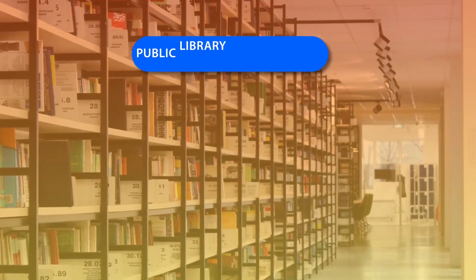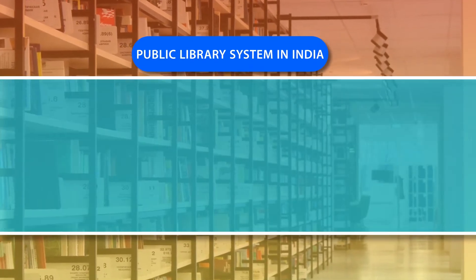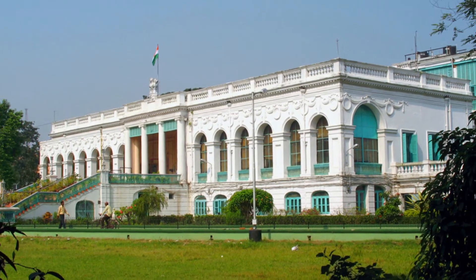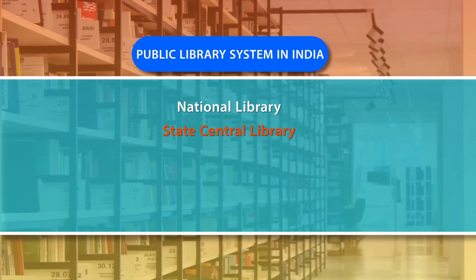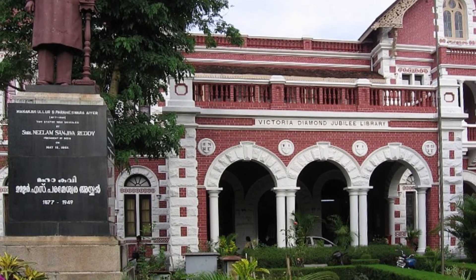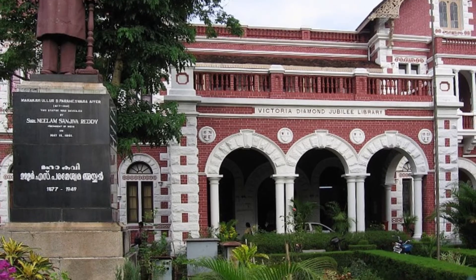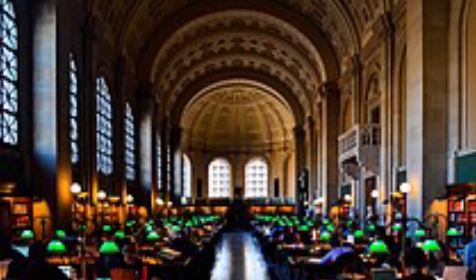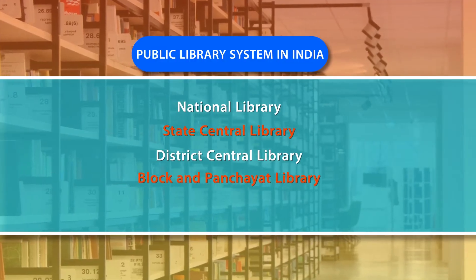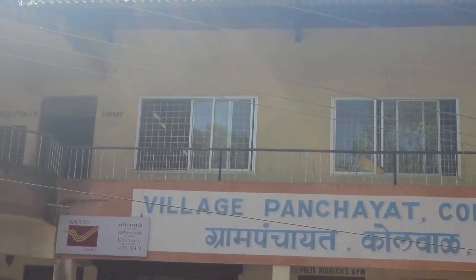Now coming to the public library system in India. In India, there are public libraries at all levels, starting from the National Library of India, which is located in Kolkata, then state central libraries generally located in state capitals, then district central libraries located at district headquarters, and then block libraries and panchayat libraries located at the block and panchayat level.